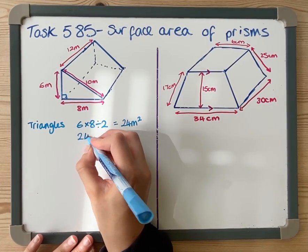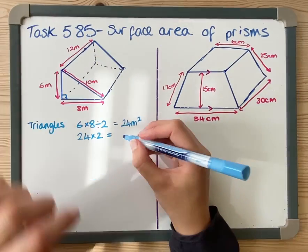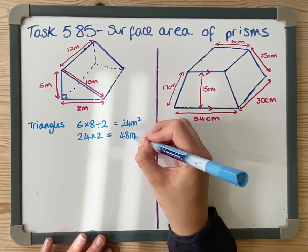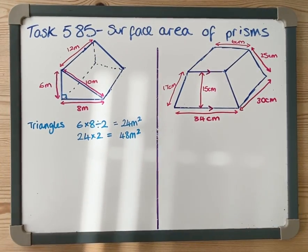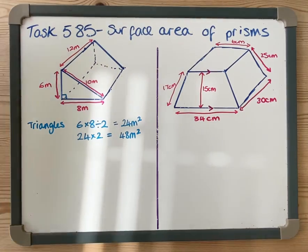Now there are two triangles, so 24 times 2 because there's that one there and that one on the other end is 48 meters squared. So that is the surface area for the triangles. I'm now going to do it for the rectangles which go around the edge.